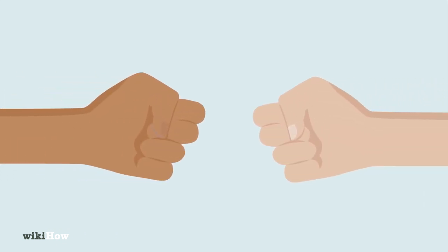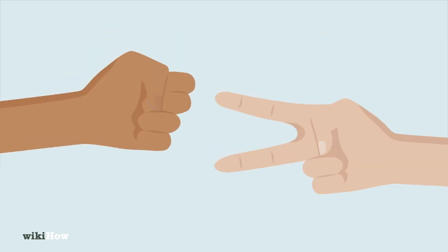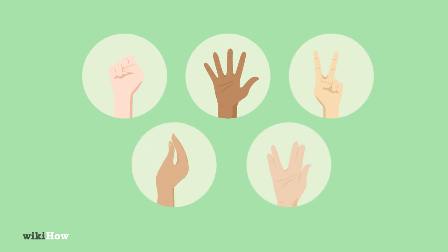To play, find another person and have both of you hold a fist out. Then, pump your fist and count to three. On three, make the hand signal for either rock, paper, scissors, lizard, or Spock.